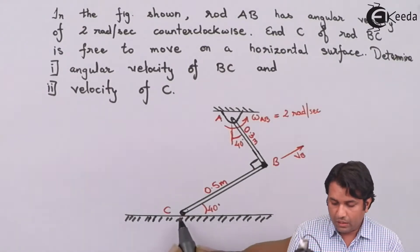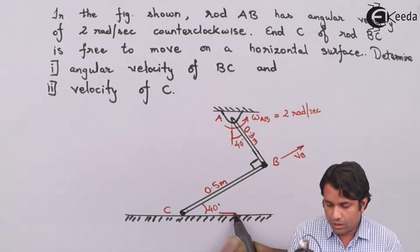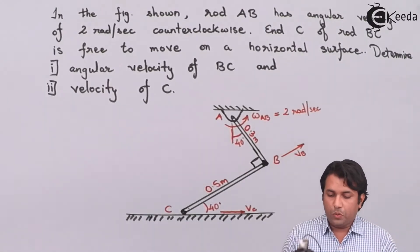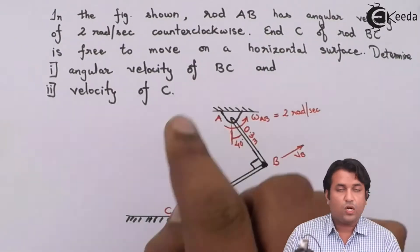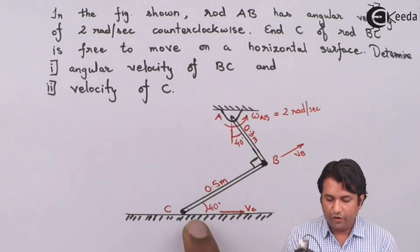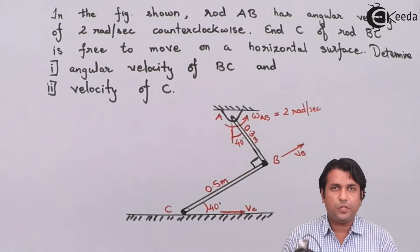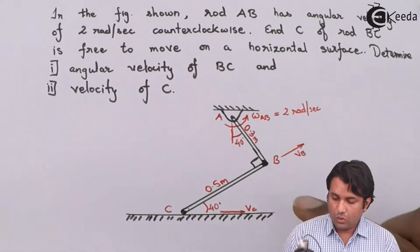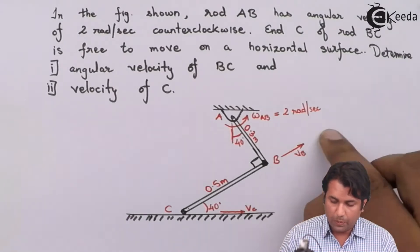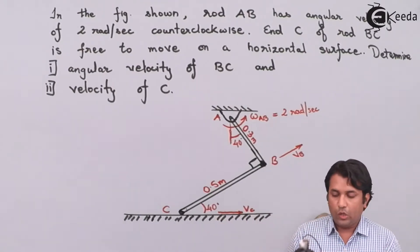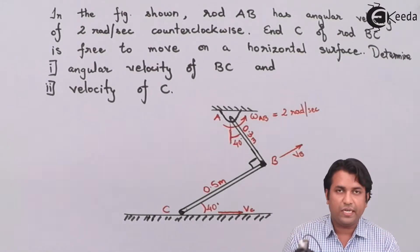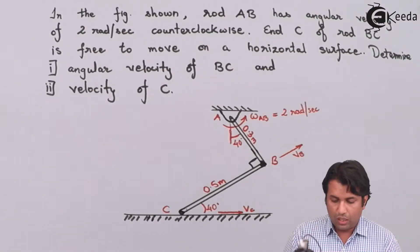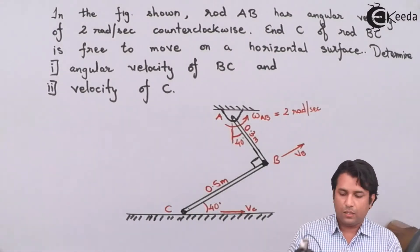The velocity at point C will be along the surface. I need to find out the angular velocity of BC and the velocity of point C. The first thing we need to do is find the ICR, that is the instantaneous center of rotation. Since this velocity is going upward and BC is towards the right, if I drop a perpendicular from these two velocity points I will get an ICR. I will draw a rough figure to determine where my ICR is going to lie.